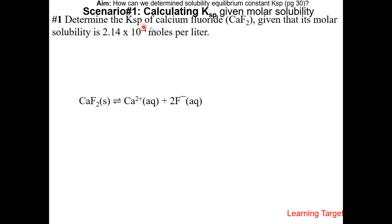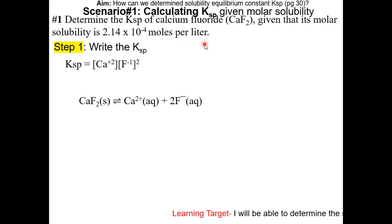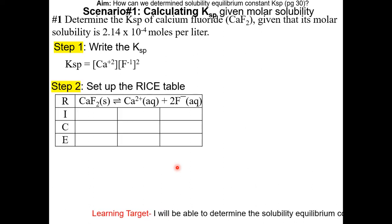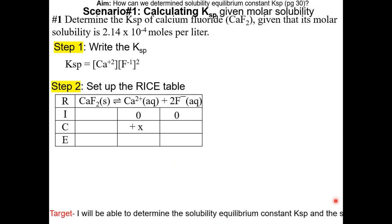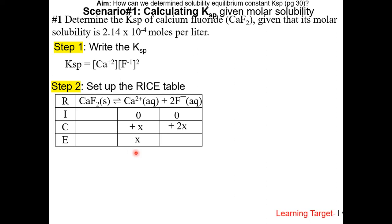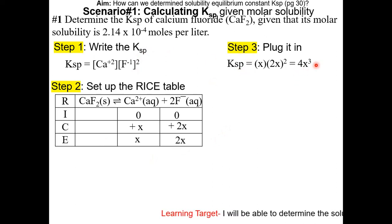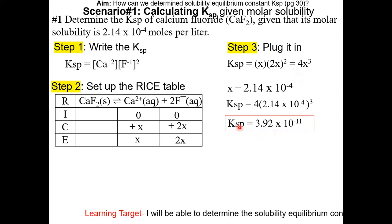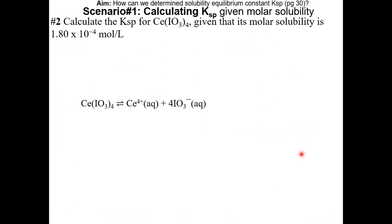Number 1 in your packet: determine the Ksp of calcium fluoride, given that its molar solubility is 2.14 × 10⁻⁴ moles per liter. The first step is to write the Ksp expression. The next step is to set up the RICE table. Initially, we do not have any calcium or fluoride ions. The change of concentration for calcium ion will be positive X; for fluoride ion, positive 2X. The equilibrium concentration for calcium ion will be X, and for fluoride ion will be 2X. Plugging in, we get Ksp equal to 4X³. Substituting X = 2.14 × 10⁻⁴, we get Ksp equal to 3.92 × 10⁻¹¹.